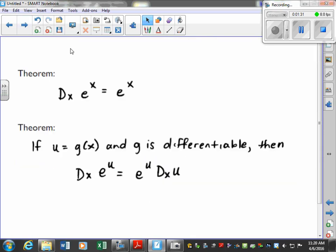Okay, and the next thing we recall is the theorem. So the derivative of e to the x is just e to the x. Now, if this is a little more complicated, and we say let it be u, then we would take the derivative of e to the u is e to the u times the derivative of u.